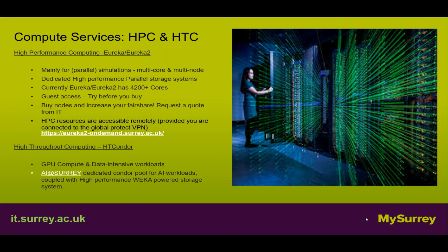For compute services, HPC and HTC are available. For high-performance computing we use Eureka and Eureka2, mainly for parallel simulations — multi-core and multi-node — with dedicated high-performance parallel storage systems. Currently Eureka and Eureka2 have 4,200 plus cores. There is guest access so you can try before you buy, and you can buy nodes to increase your fair share. HPC resources are accessible remotely provided you are connected to Global Protect via eureka2-ondemand.surrey.ac.uk. For high-throughput computing, HTCondor handles GPU compute and data-intensive workloads. AI at Surrey is a dedicated Condor pool for AI workloads coupled with high-performance Weka-powered storage systems.